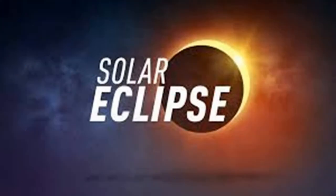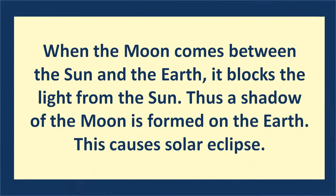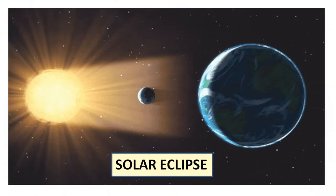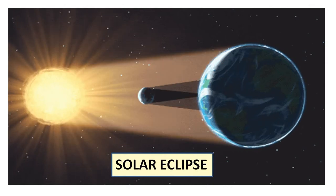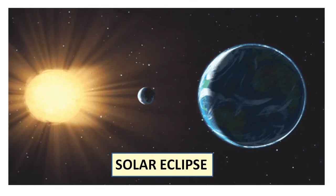Let's discuss each in detail. First, Solar Eclipse. Children, when the moon comes between the sun and the Earth, it blocks the light from the sun. Thus, a shadow of the moon is formed on the Earth — this causes Solar Eclipse. As you can see here, when the moon comes between the Earth and the sun, the shadow of the moon forms on the Earth. This condition is called Solar Eclipse.